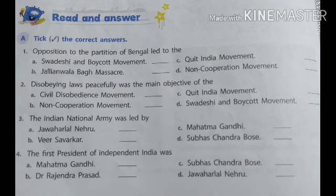Second point: Disobeying laws peacefully was the main objective of the... Options are: A. Civil disobedience movement, B. Non-cooperation movement, C. Quit India movement, D. Swadeshi and boycott movement. And the answer is A. Civil disobedience movement.